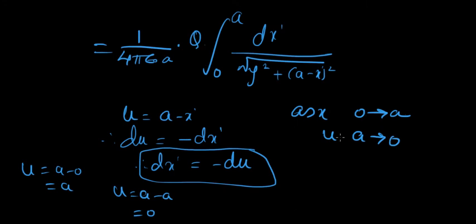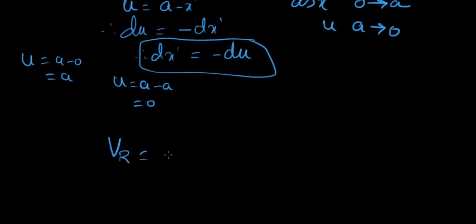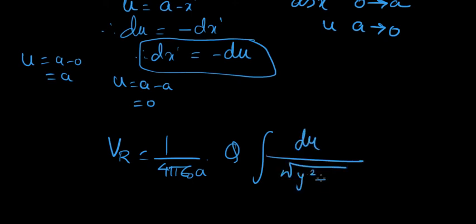So as x goes from 0 to A, u goes from A to 0. So let's change those values and we write our integration. So VR equals 1 over 4 pi epsilon naught A times Q integral of du over y squared plus u squared. And now, the integration is gonna go from, instead of 0 to A, it's gonna go from A to 0.